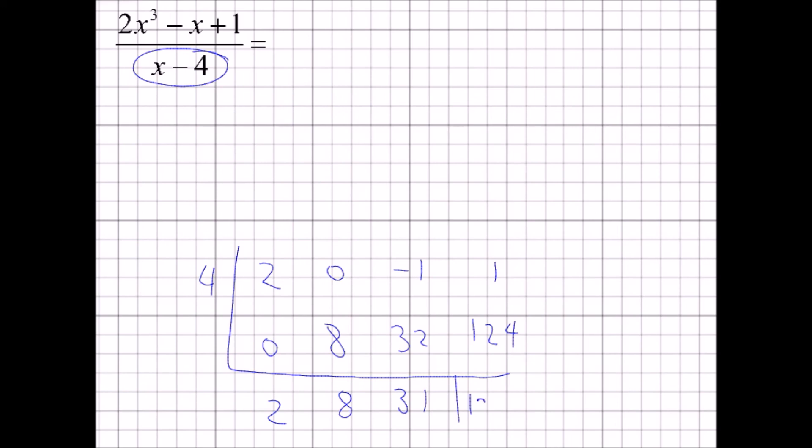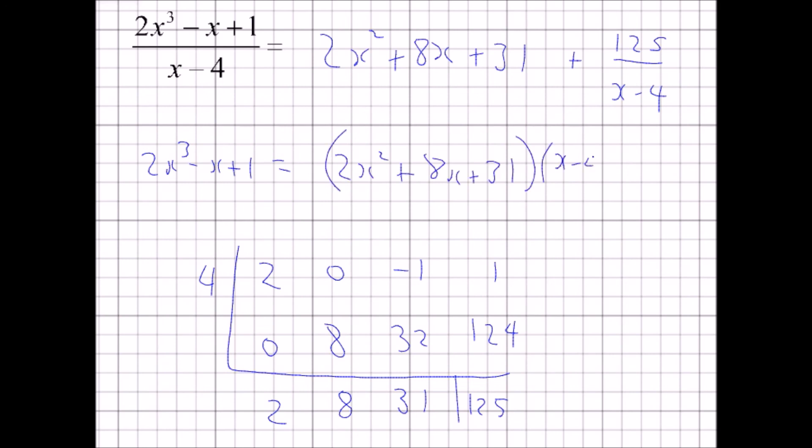Add those as 125. So if I were to work out this expression up here, then x minus 4 goes into that cubic 2x squared plus 8x plus 31 times, and the remainder is 125. Write the remainder over the divisor of x minus 4. Remember, that means you could write 2x cubed minus x plus 1 as the quotient 2x squared times by the divisor, and then plus the remainder.